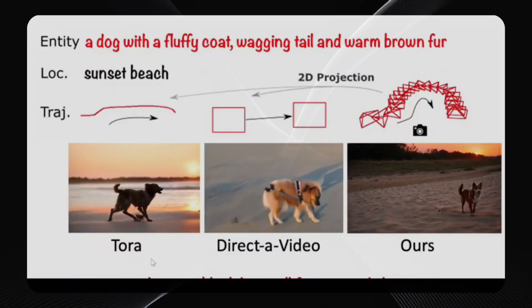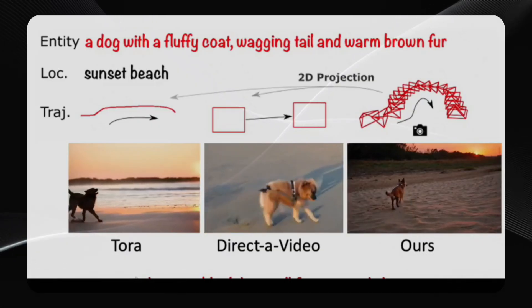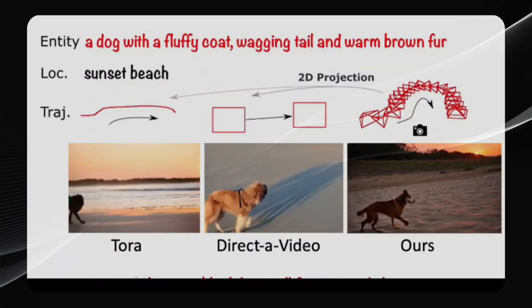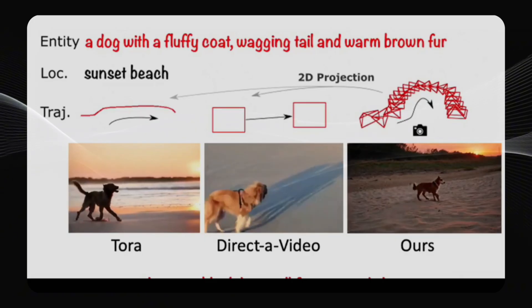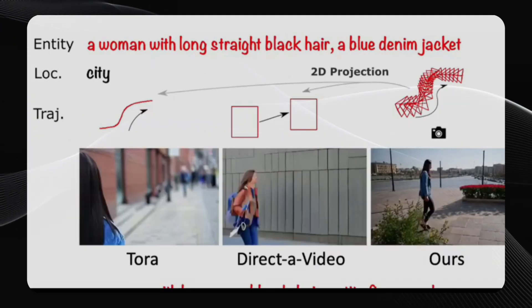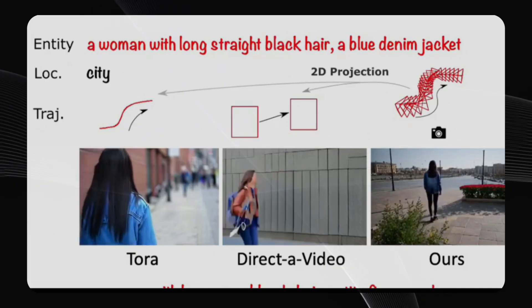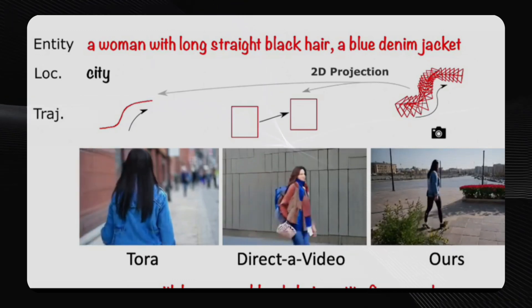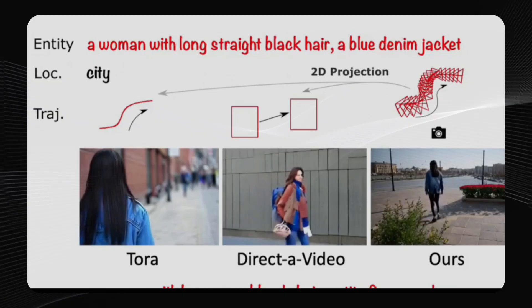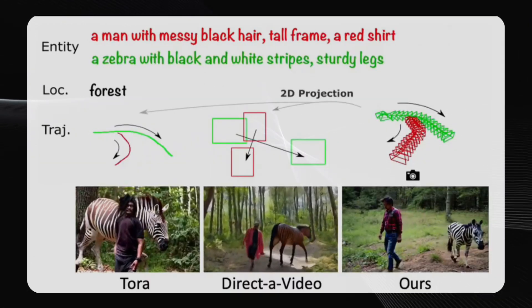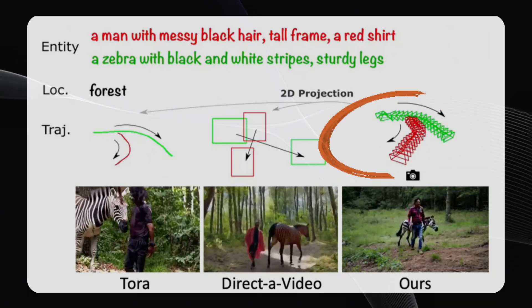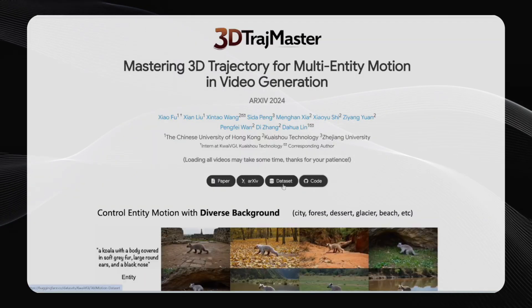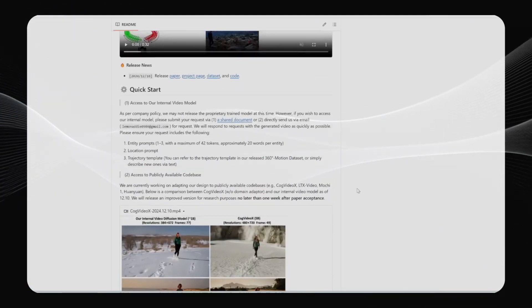If you compare 3D TrajMaster to other methods that let you input trajectories, this new one generates much more accurate results in most cases. For example, with a dog on a sunset beach and a given trajectory, 3D TrajMaster is the only one that really follows the specified path. With a woman in a blue denim jacket in the city, none of the competitors could get the woman to walk along that specific path, but 3D TrajMaster nailed it. And with multiple trajectories — a man with messy black hair and a zebra in a forest — the competitors struggled, but 3D TrajMaster got it right. They have a Hugging Face link with the dataset and a GitHub repo with instructions to run it using the open-source CogVLM model.